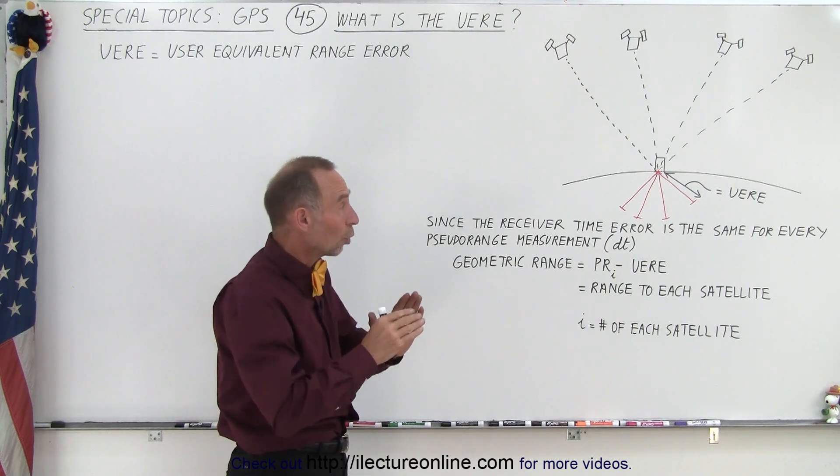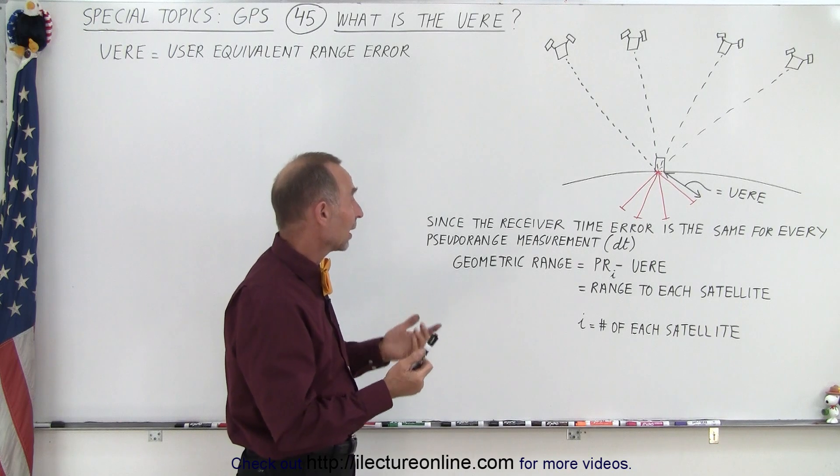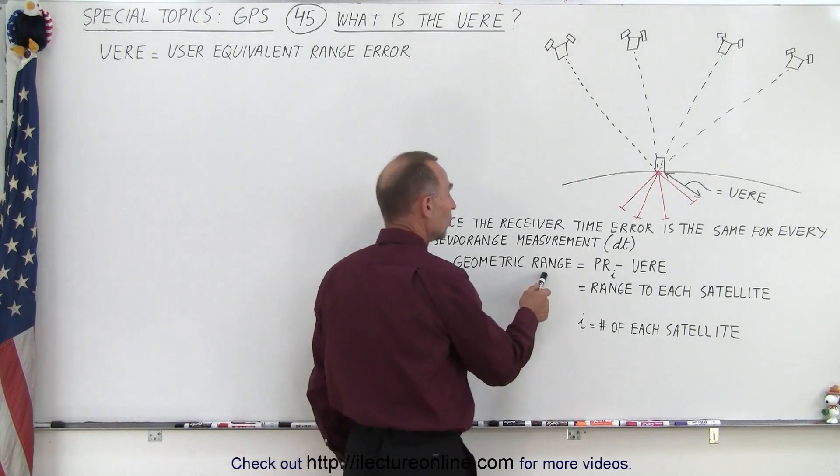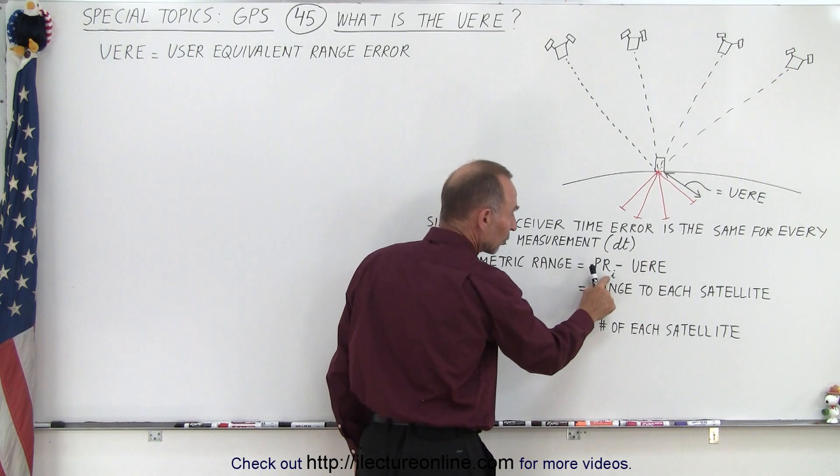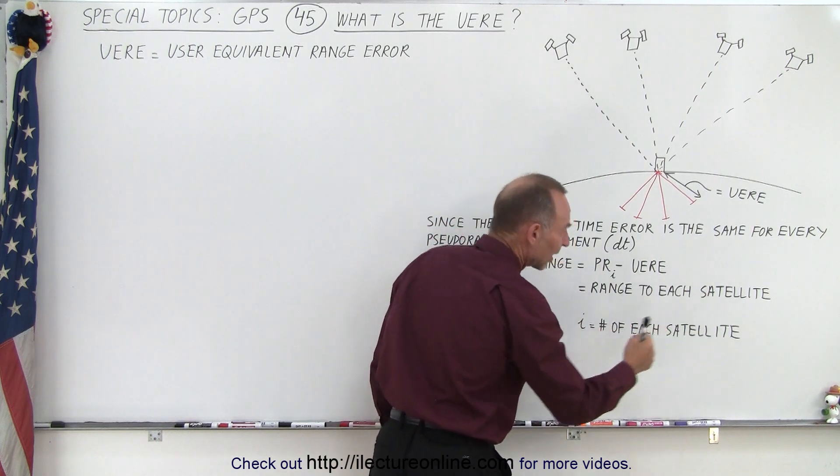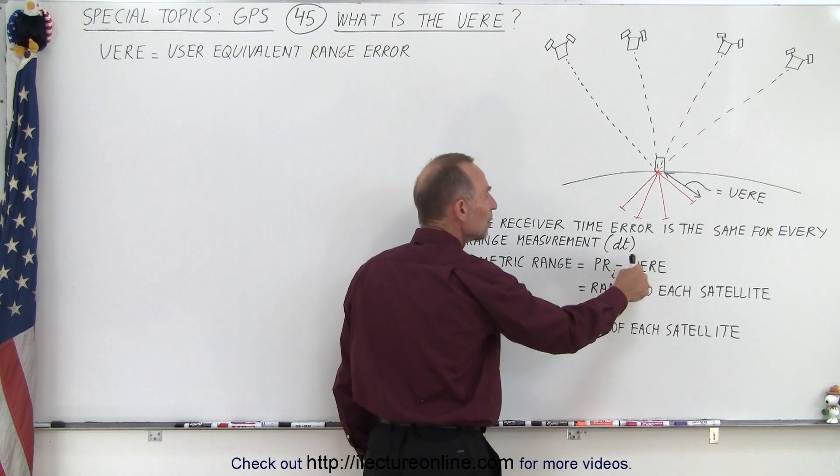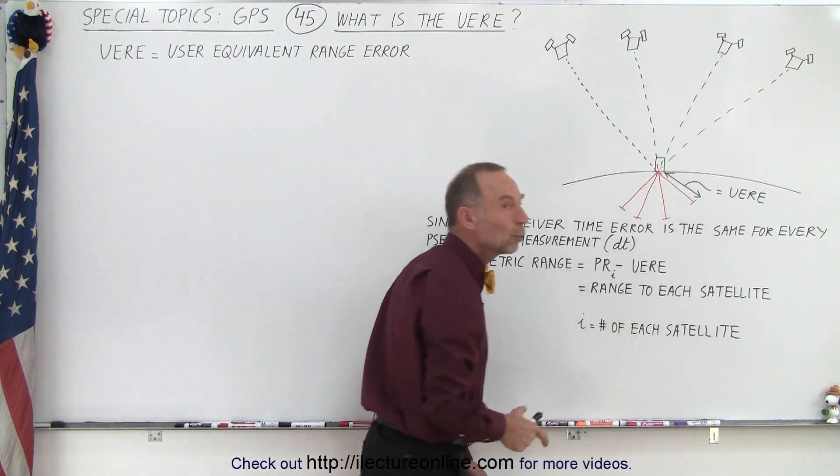And so therefore we know that they're all the same and so then simply to find a true geometric range between the satellite and the receiver, we simply take the pseudo-range measurement for each of the receivers, I is the number of each satellite, minus the UERE which is the same for every one of them.